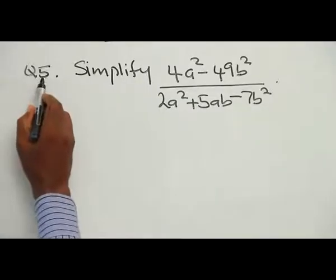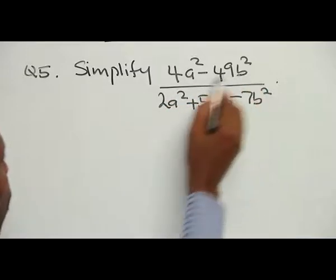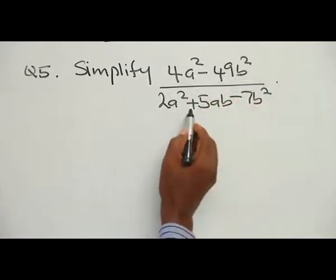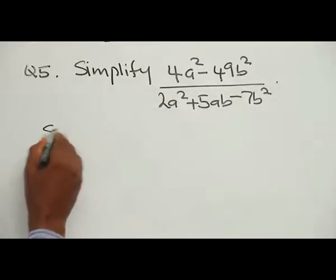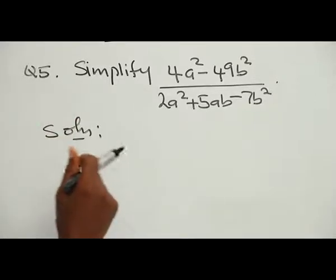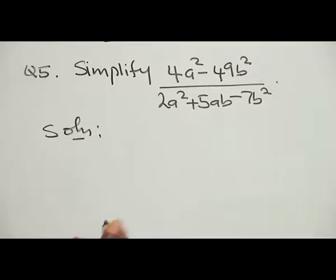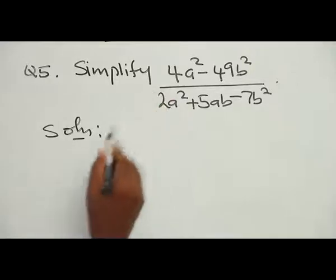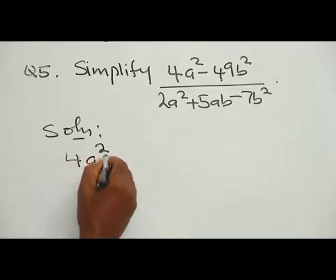Question number 5: Simplify (4A squared minus 49B squared) all over (2A squared plus 5AB minus 7B squared). Each question here has a special way of solving it. Taking the numerator step by step, we notice that 4A squared is (2A) squared and 49B squared is (7B) squared.